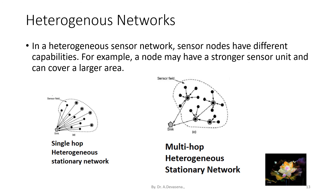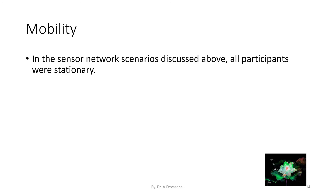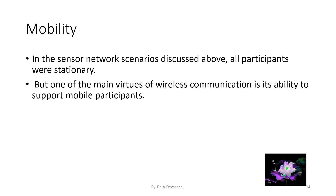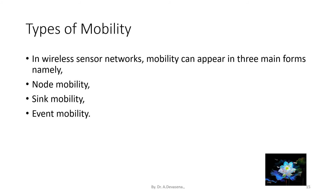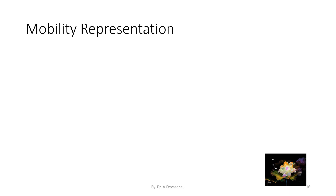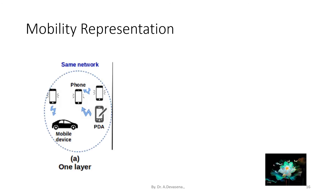Network mobility: so far in sensor network scenarios, we discussed all participants as stationary, but one of the main virtues of wireless communication is its ability to support mobile participants. In wireless sensor networks, mobility can appear in three main forms: node mobility, sink mobility, and event mobility.